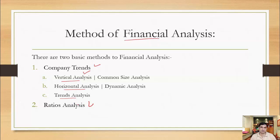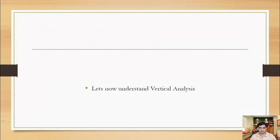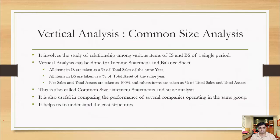In case of horizontal analysis, you calculate the growth rate of each item of the income statement and each item of the balance sheet. In case of trend analysis, you again calculate the growth rate but the base year is particularly decided. I'll explain all these techniques — just pay attention to this video. So let's go forward and understand what is vertical analysis.